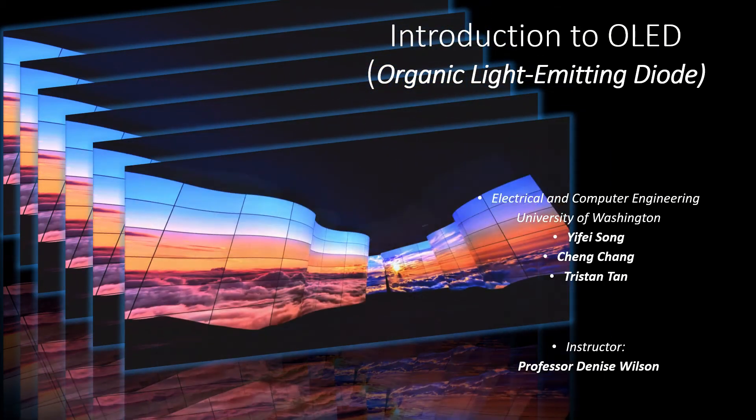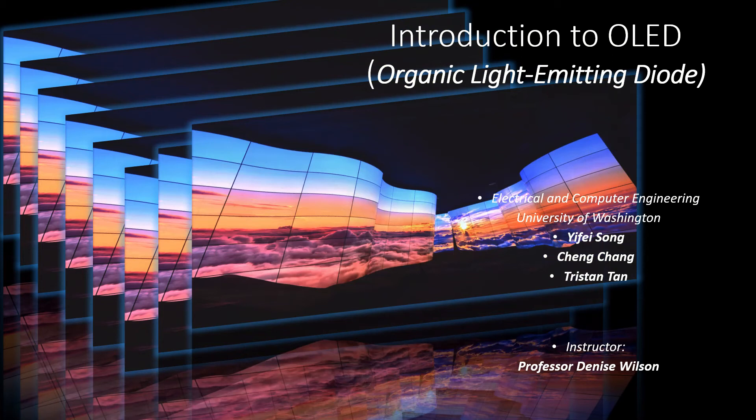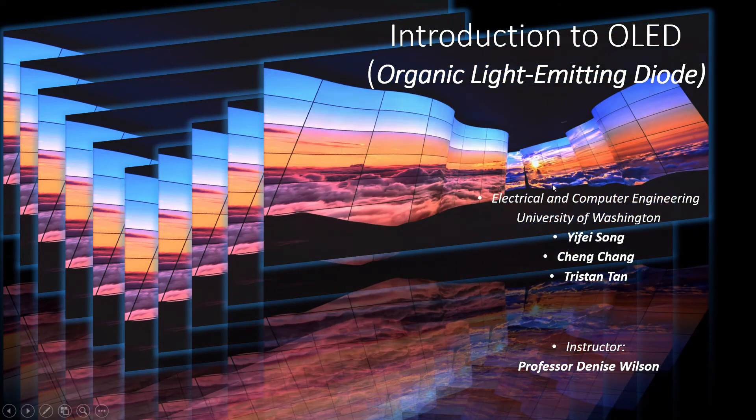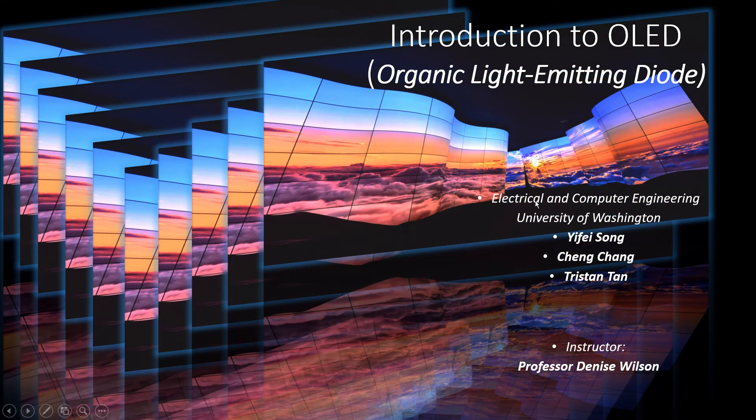OLED, Organic Light Emitting Diode, is a new display technology which transfers energy from electricity into light. By using different recipes of organic materials inside the diode, different colors of light can be emitted.